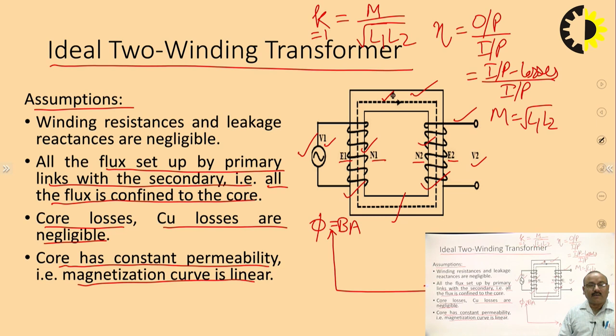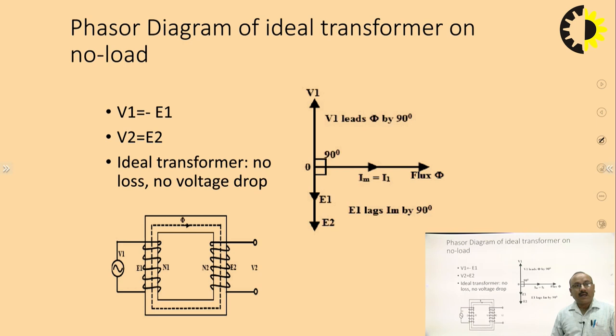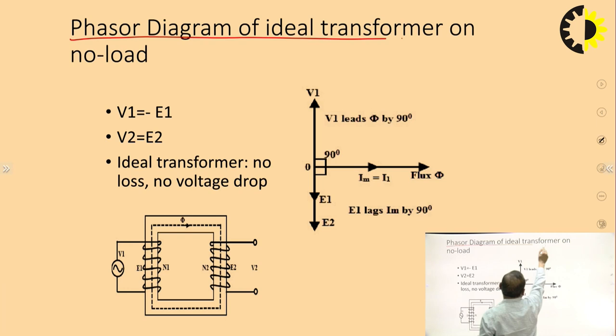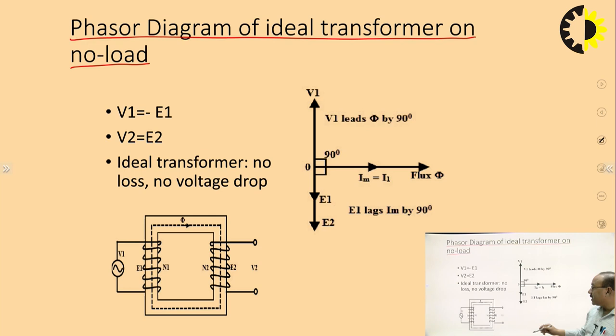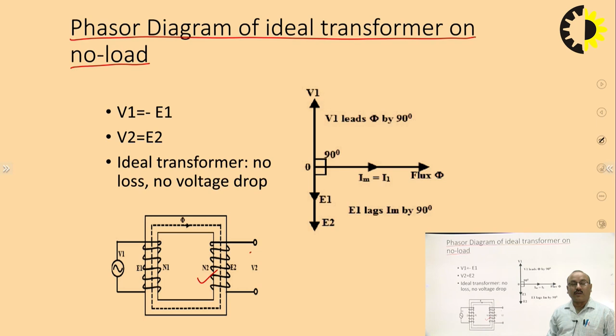Now we will draw the phasor diagram of the ideal transformer under two conditions: no load and load. For the phasor diagram at no load, the meaning of no load is no current or no power on the secondary side — the secondary side is kept open circuit. Since the secondary is open circuit, there is no current and no power on the secondary side.